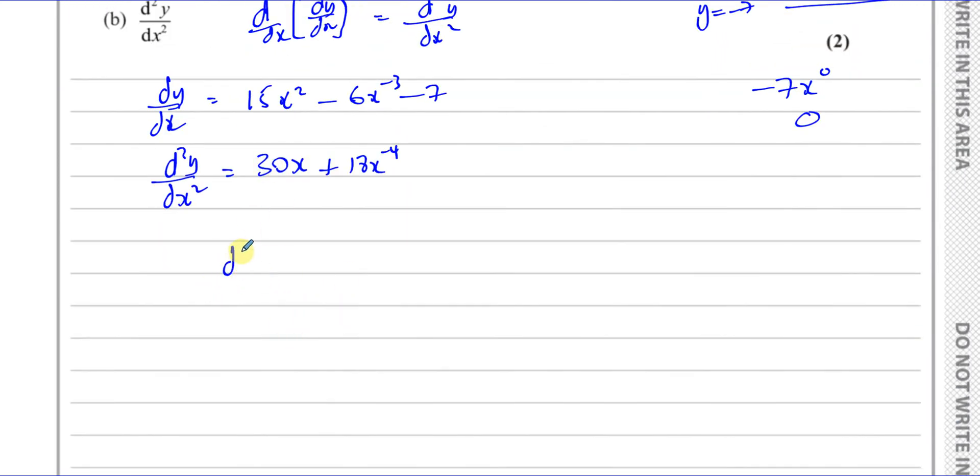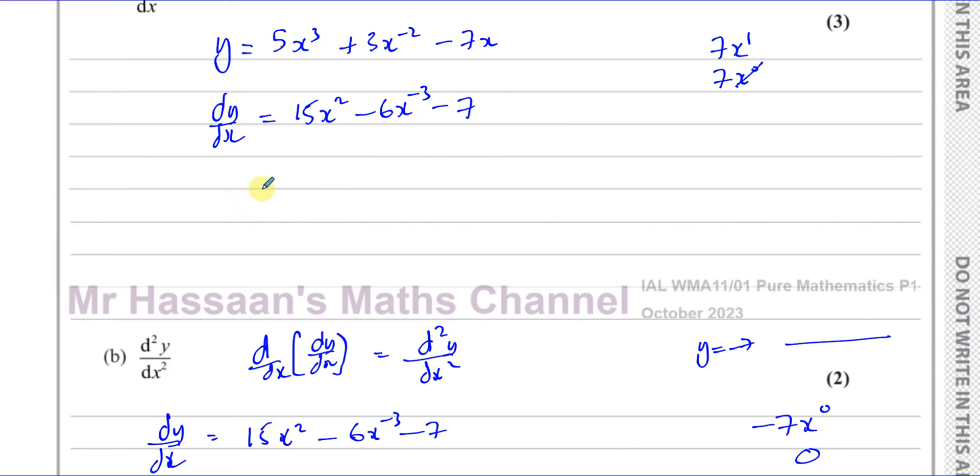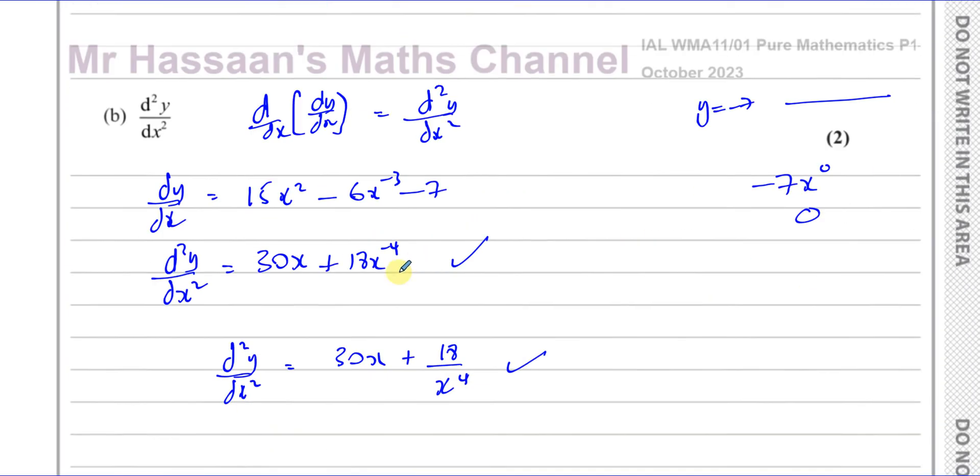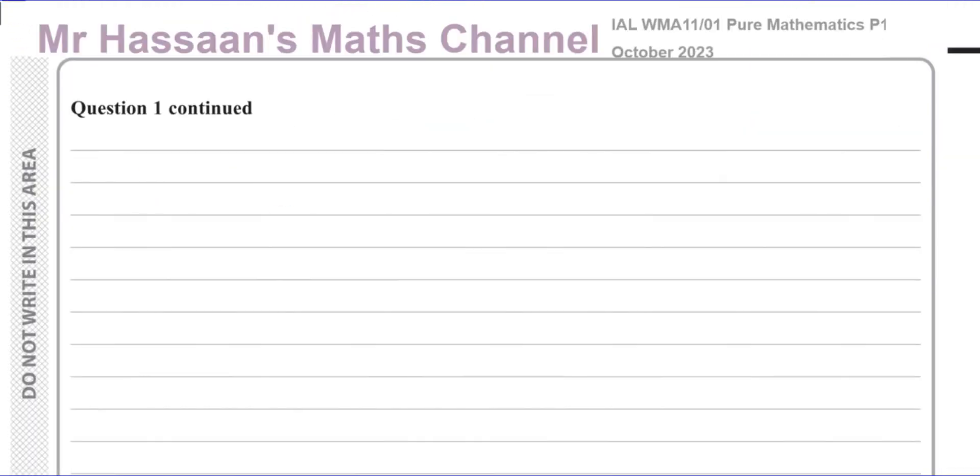And that's the answer to this question. You can leave it like this. You could also, in the end if you want to, you can leave it as 30x plus 18 over x to the power of 4. That's correct. Both of them are considered fine. Similarly, here we could have written this as dy/dx equals 15x squared minus 6 over x cubed minus 7. Both of those are fine. And I think that's the answer to question number 1. That completes question number 1. Very simple. Just differentiating something and differentiating it once more.